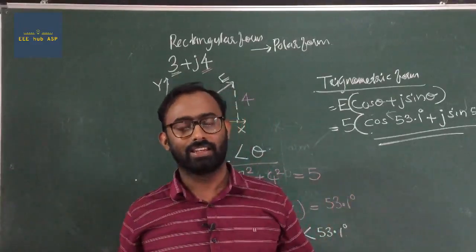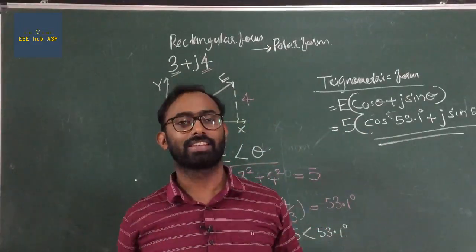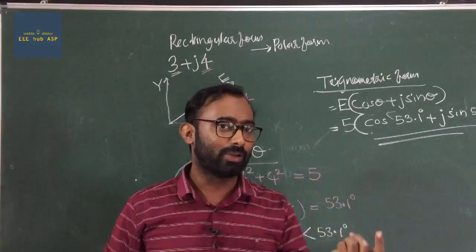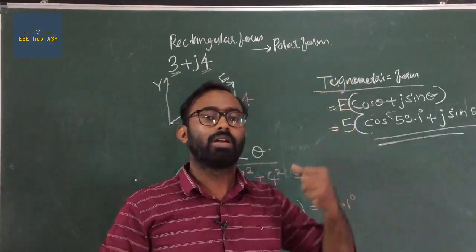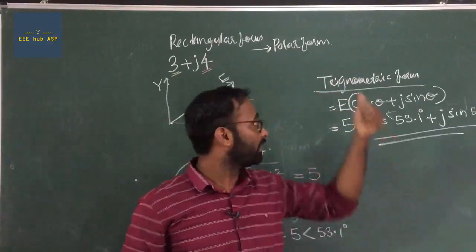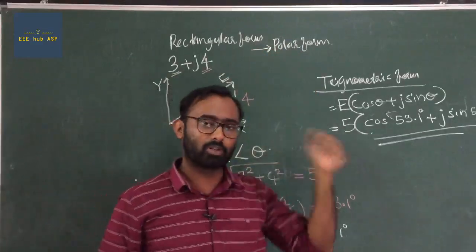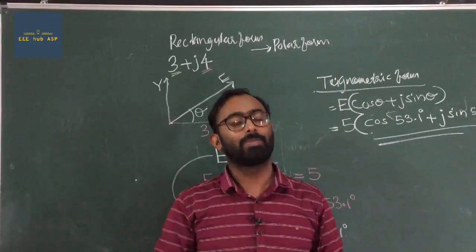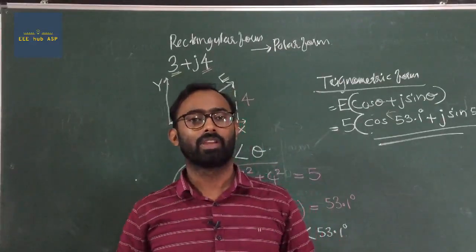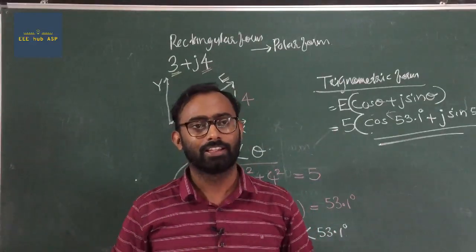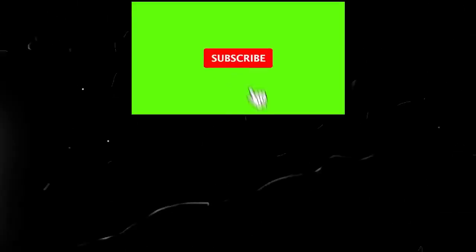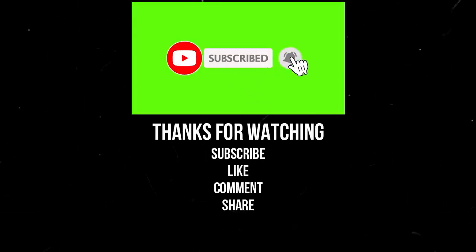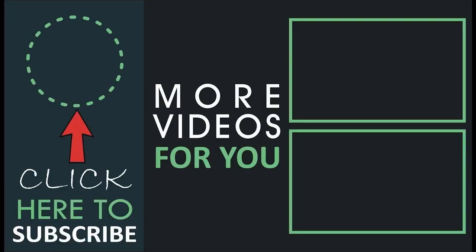This is an addition of two alternating quantities and two vectors. This is the rectangular form, addition form, polar form, trigonometric form — add, subtract, multiply and division. Thank you. You can easily use rectangular form. Thank you.